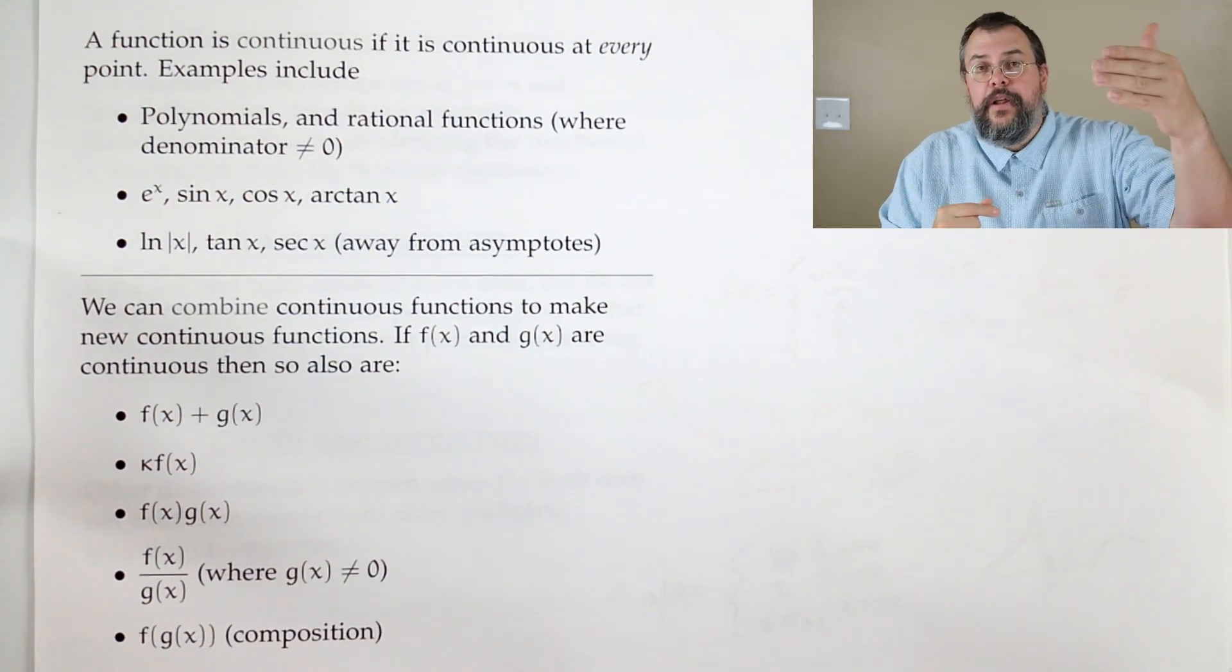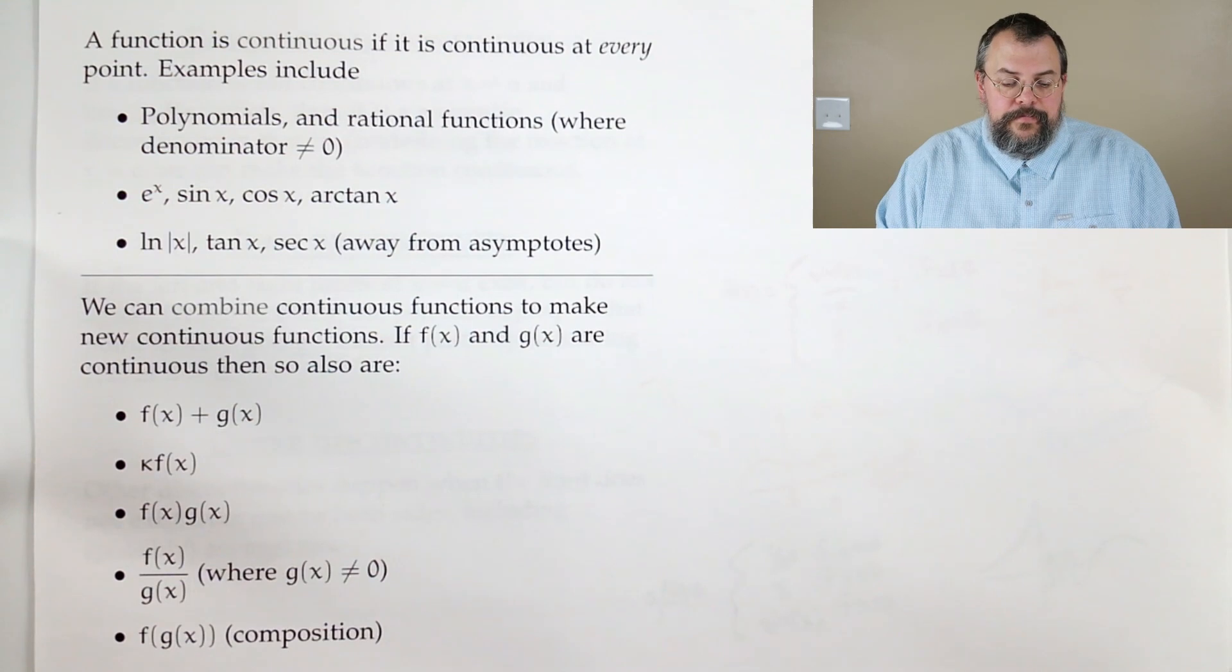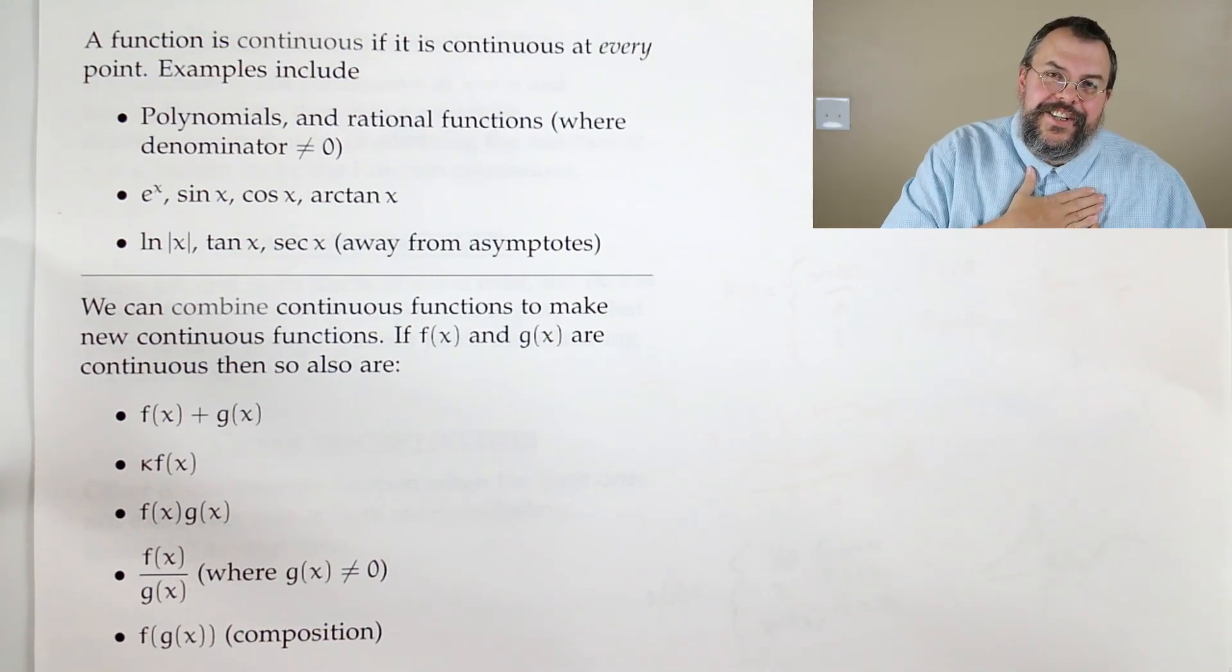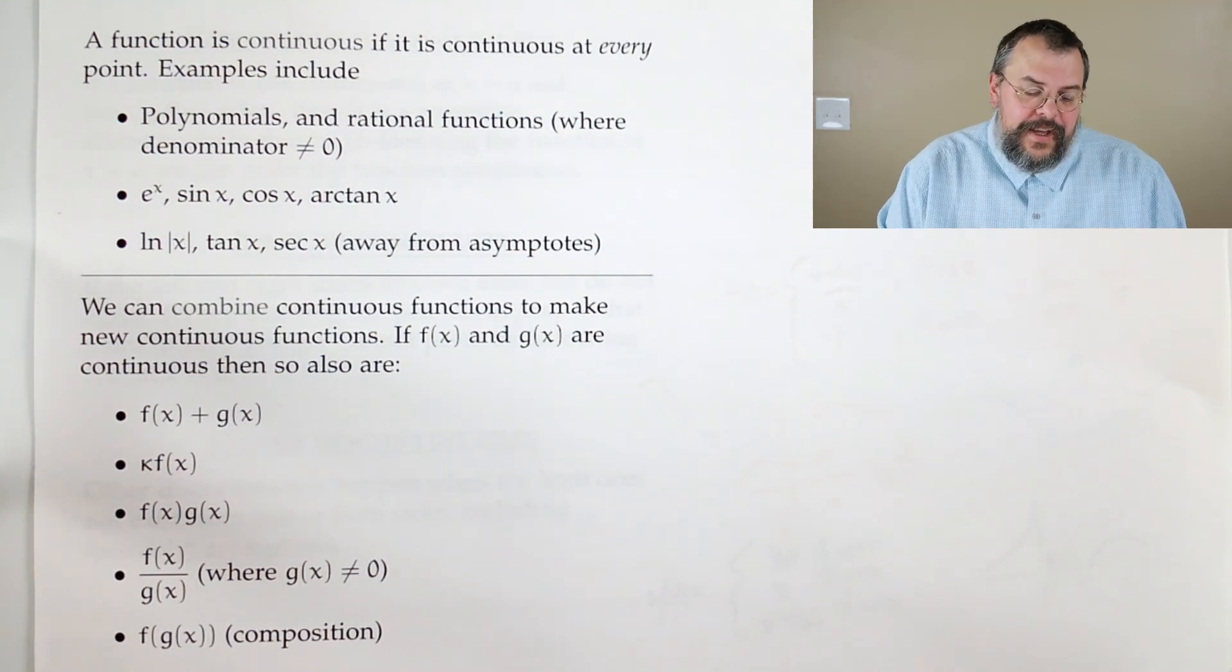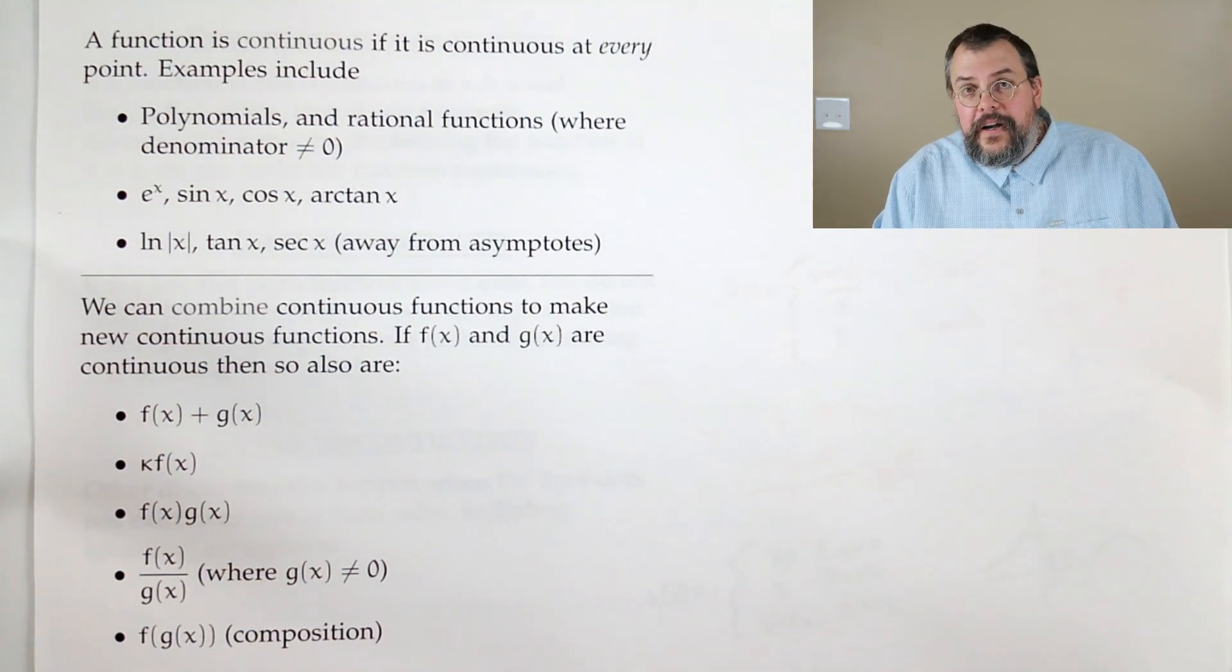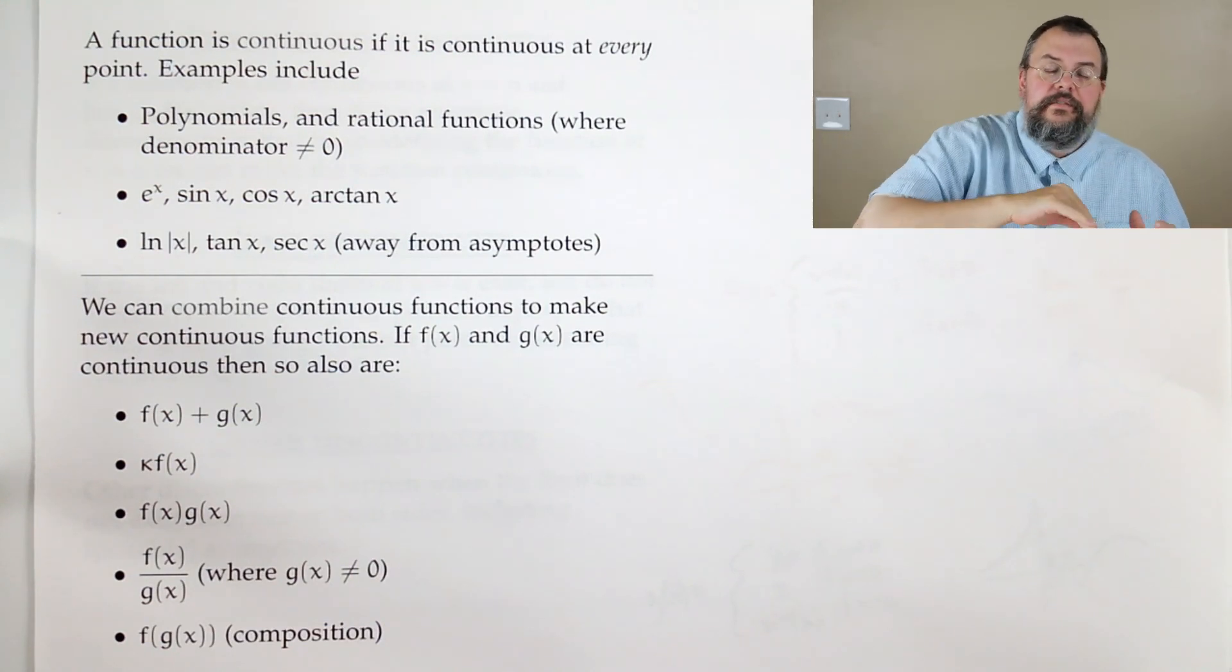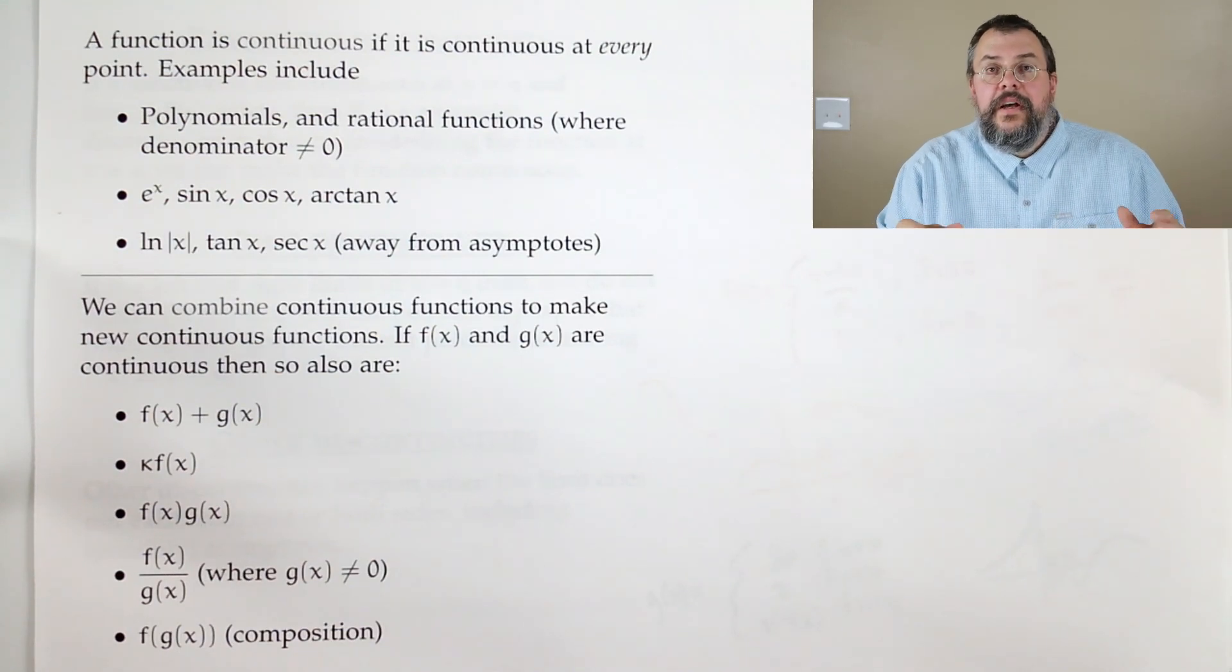So, what kind of functions might we encounter? Well, polynomials. Rational functions. Now, rational functions are where you have a polynomial over a polynomial. Now, rational functions are fine as long as we stay away from where the denominator is zero. e^x. Great function. sin(x). cos(x). arctan(x). Another beautiful function. We're going to have a lot of fun with arctan(x) this class. Now, there are other functions which have problem areas. Things like log, secant, tangent. And when I say they have problem areas, they have these asymptotes where you shoot off towards positive infinity or maybe shoot off to negative infinity. As long as you avoid those areas, the rest of them are perfectly fine.